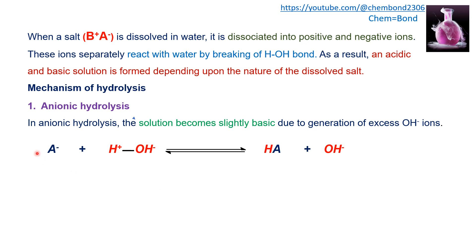In the anionic hydrolysis reaction, the anionic part A⁻ reacts with water. The H-O-H bond of water cleaves, and the H⁺ part of water interacts with the anion A⁻ to produce HA, a weak acid. The OH⁻ part remains free, resulting in excess OH⁻ ions that make the resultant solution basic.